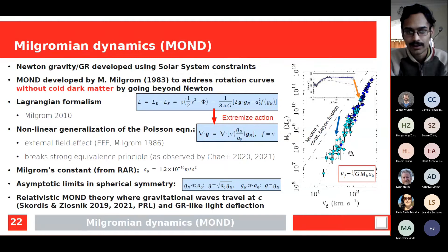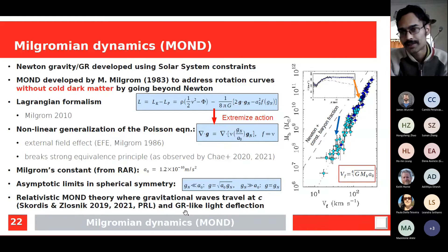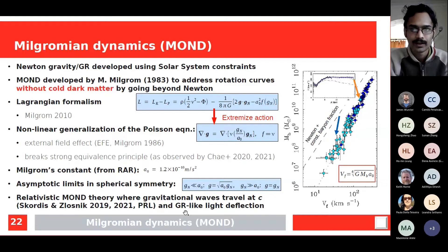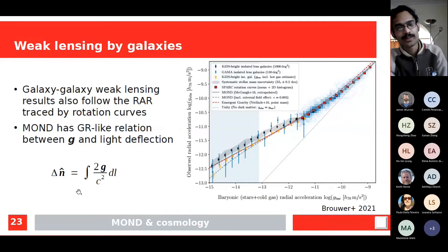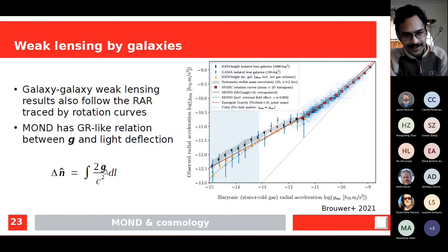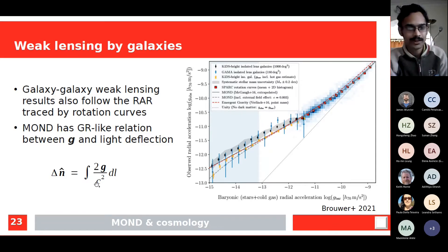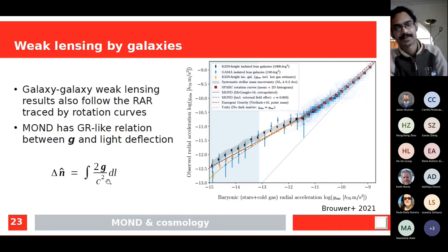Briefly, there is a relativistic MOND theory in which gravitational waves travel at the speed of light — needed to explain certain observations — and which predicts GR-like light deflection. In other words, the non-relativistic gravitational field felt by slow-moving particles like stars affects the trajectory of a photon in the same way as in GR. This equation relating photon deflection to the gravitational field remains valid in MOND: MOND enhances the effective G for a given baryonic distribution, but the equation still holds.